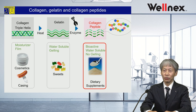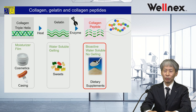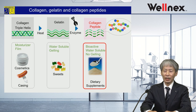Denatured collagen is called gelatin. The triple helix structure is dissolved and the three-dimensional structure is altered. Gelatin dissolves in hot water very well and is used in food processing because when gelatin is cooled, it gels. Collagen peptides are made by breaking down the gelatin with proteolytic enzymes. Collagen peptides usually contain various sizes of peptide chains. Collagen peptides dissolve well in cold water but do not gel. The most important collagen peptide property is its strong biological activity, and they are used as dietary supplement materials.